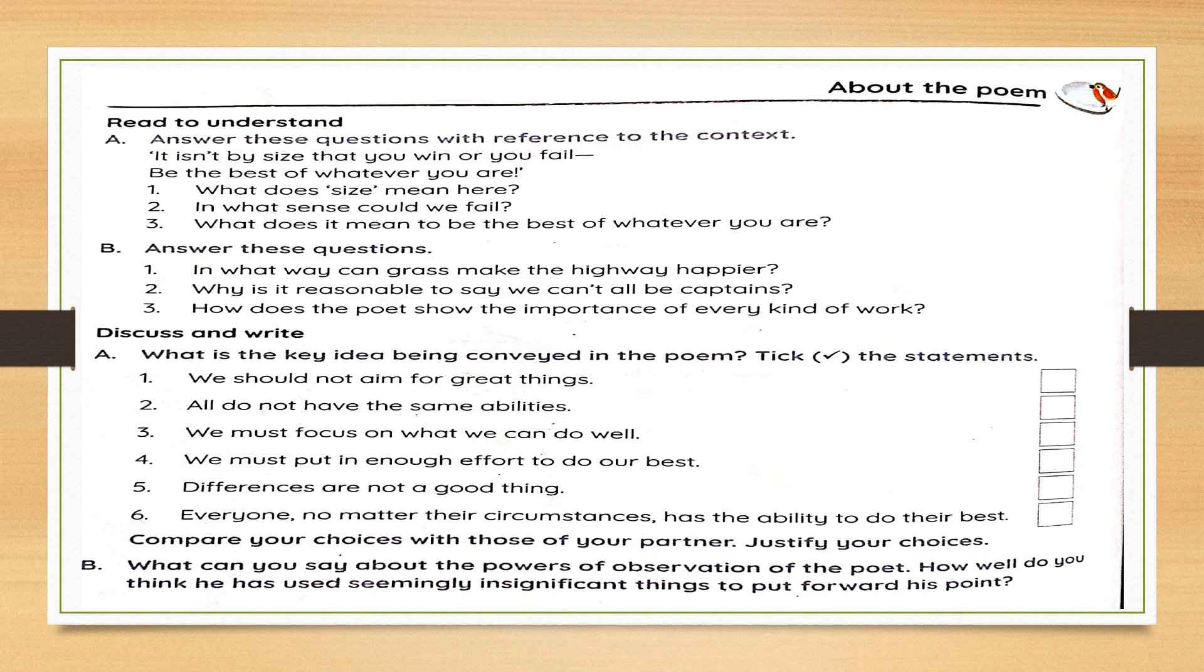Coming to discuss and write, here you have certain statements. If the same meaning has been conveyed in the poem, you will be putting a tick mark. If not, you will cross it out. Now, this is something you will do on your own in the textbook itself. We should not aim for great things. Is the poet telling us something like this? Of course not. We must focus on what we can do well. Yes. All do not have the same abilities. True. We are different in our abilities. Complete the rest on your own.